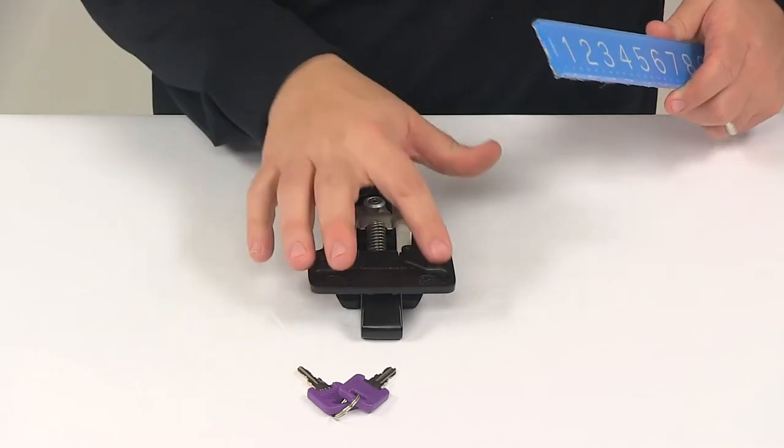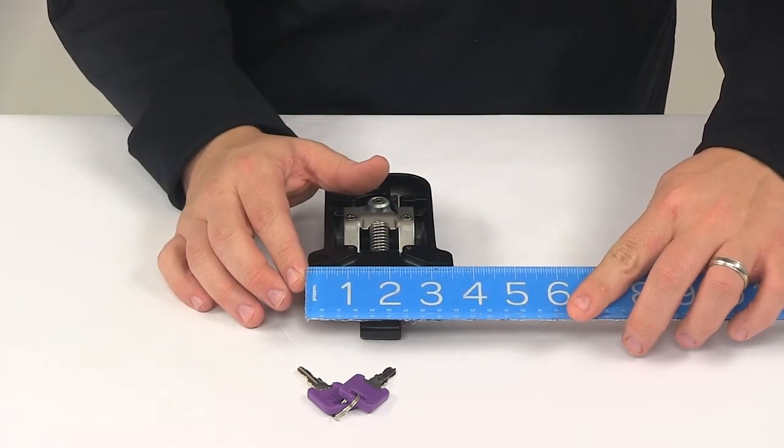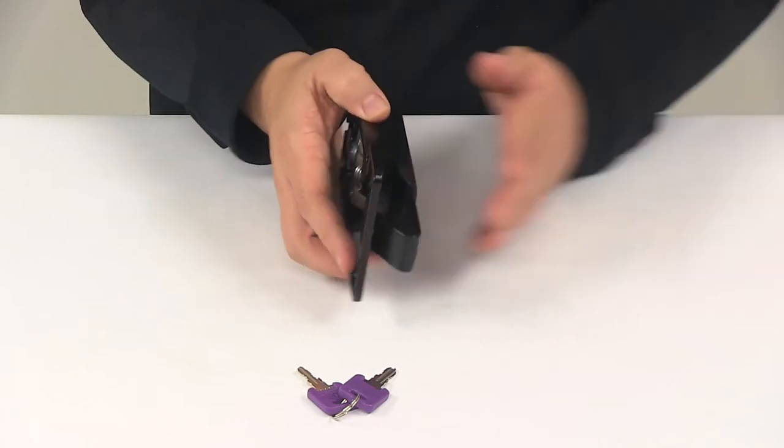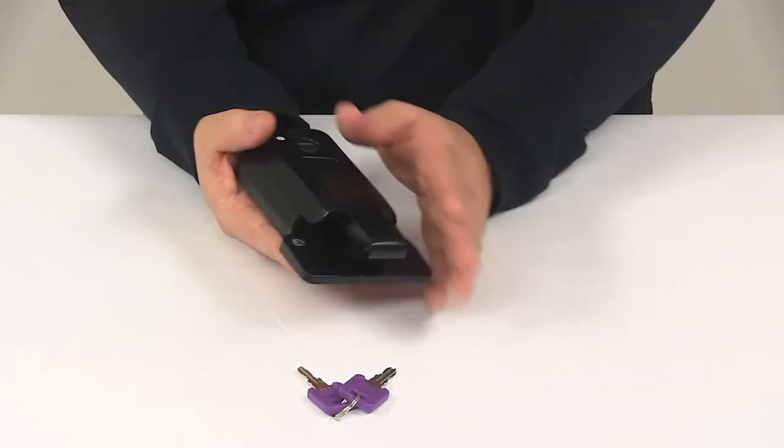The overall width at the widest point, which would be this location here, is three and a half inches. I also measured the thickness, and it's about an inch and a quarter thick.